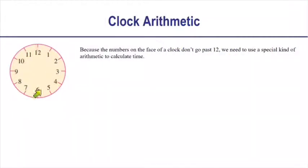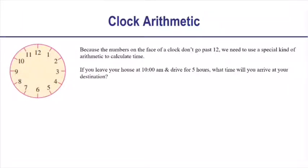Here is a clock face with no hands on it. Let's think about how we add time on a clock. Because the numbers on the face of the clock don't go past 12, we have to use a special kind of arithmetic to calculate time. For example, if you leave your house at 10 a.m. and you drive for 5 hours, what time will you arrive at your destination?